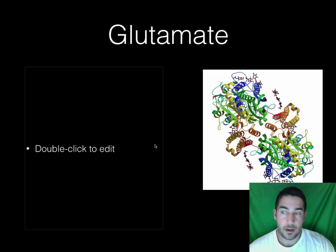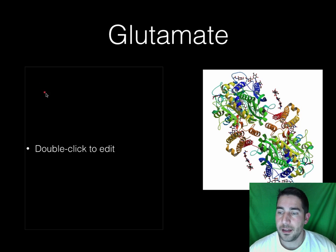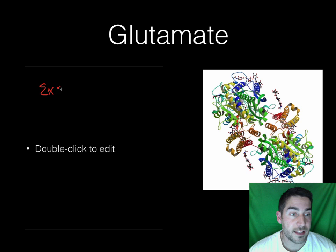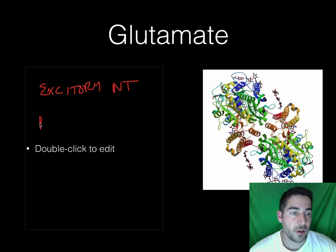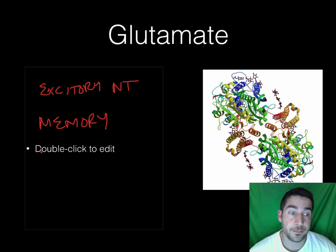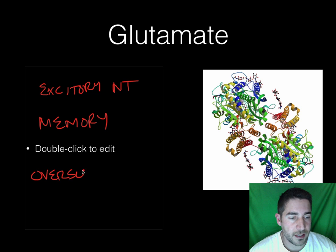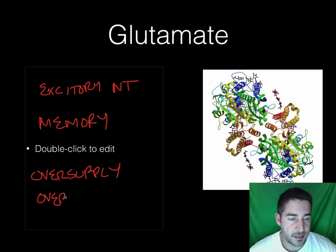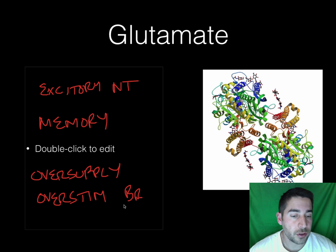And then finally, our last one will be glutamate. Glutamate's function is as an excitatory neurotransmitter, and it's involved in your memory. So as opposed to GABA, which inhibits, glutamate excites things. An oversupply — because this is an exciter — can overstimulate the brain, and that can also lead to seizures.